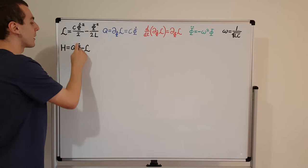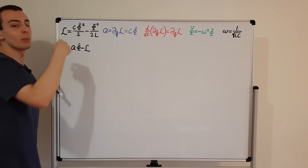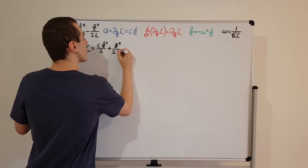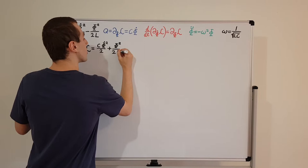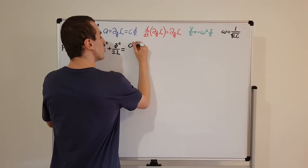When we perform this Legendre transform by substituting this relationship in, we're actually going to change the minus sign to a plus sign. So we get kinetic plus potential, which is equal to C phi dot squared over 2 plus phi squared over 2L. The only difference is the sign in between these two terms — it's the sign of the potential energy function.